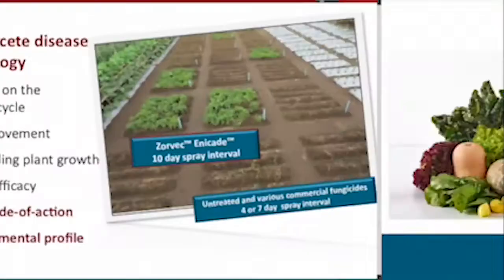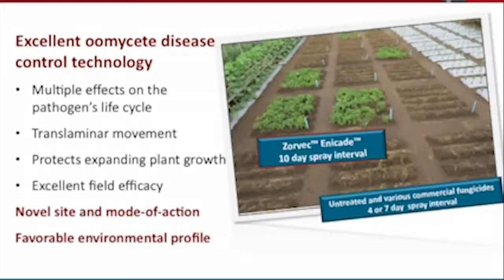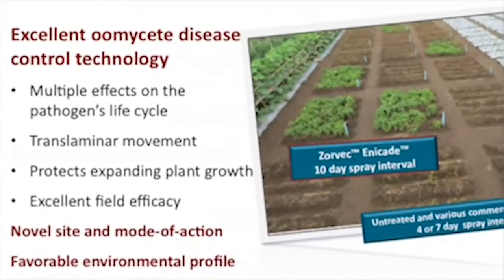Its technical name is Oxothiopiprolin and it's a new mode of action — its own group, its own resistance group. It's a product that is very sensitive and very effective on Oomycete fungi. It's very specific — it won't do anything on powdery mildews or alternaria; it's very much Oomycetes.